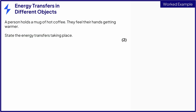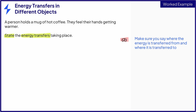Let's have a look at another example where students often think it must be wrong. A person holds a mug of hot coffee and feels their hands getting warmer. State the energy transfer taking place — this time it's two marks. The coffee is in the mug, so there must be an energy transfer causing the mug to heat up, and then another energy transfer that causes the hands to heat up.